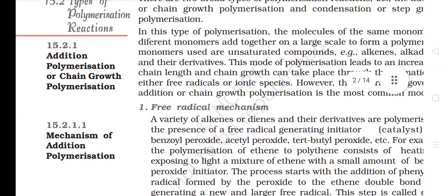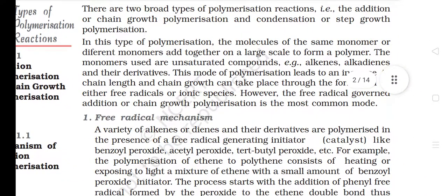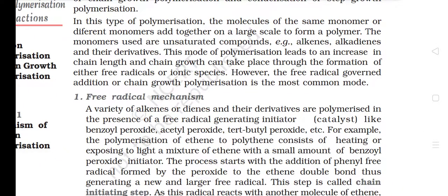15.2.1 Addition Polymerization or Chain Growth Polymerization. In this type of polymerization, the molecules of the same monomer or different monomers add together on a large scale to form a polymer. The monomers used are unsaturated compounds, e.g. alkenes, alkadienes and their derivatives. This mode of polymerization leads to an increase in chain length, and chain growth can take place through the formation of either free radicals or ionic species. However, the free radical governed addition or chain growth polymerization is the most common mode.